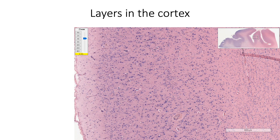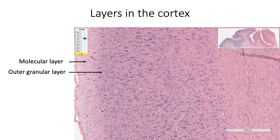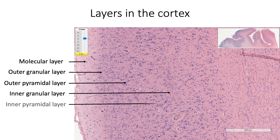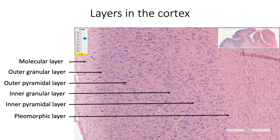In most places, cerebral cortex shows six layers. From outside inward, they are: molecular layer, outer granular layer, outer pyramidal layer, inner granular layer, inner pyramidal layer, and pleomorphic layer. Inside these six layers of cortex, we also find the white matter.